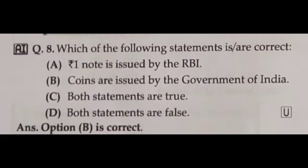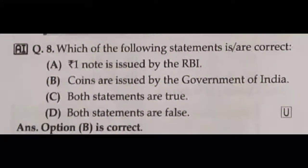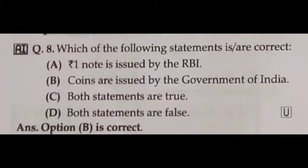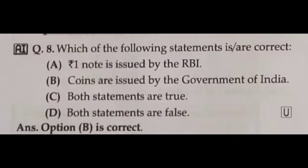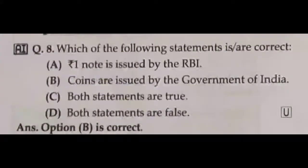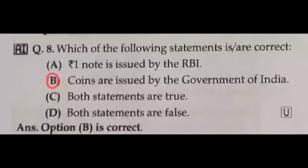Question number eight: which one of the following statements is correct? Rupee 1 note is issued by the Reserve Bank of India. Coins are issued by the Government of India. Normally coins in India are issued by the Government of India — it is the responsibility of the Government of India to mint coins of all denominations. So option B is the correct answer.